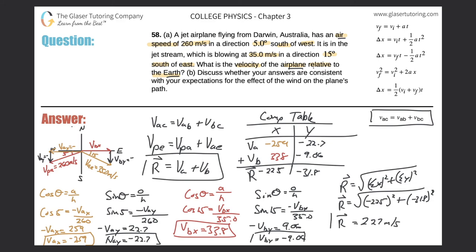That's the resultant vector, which represents the velocity of the plane relative to the earth — which is exactly what the question was asking. The velocity of the airplane relative to the earth is 227 meters per second. Thanks for tuning in, hope this helped. Please do subscribe and I'll see you in the next video.